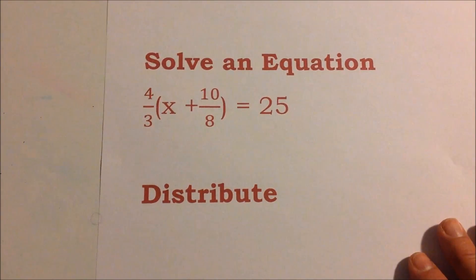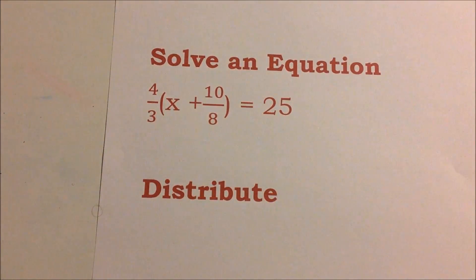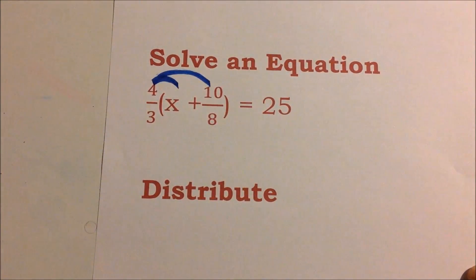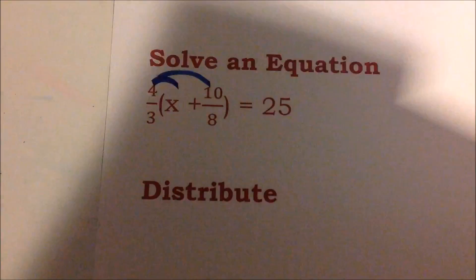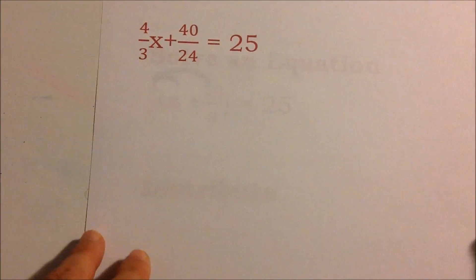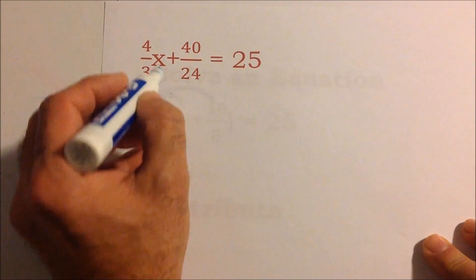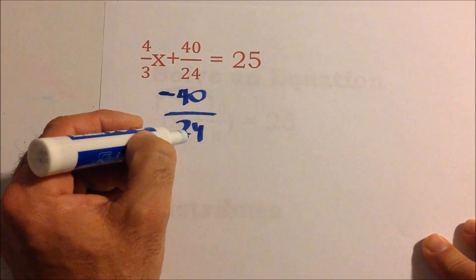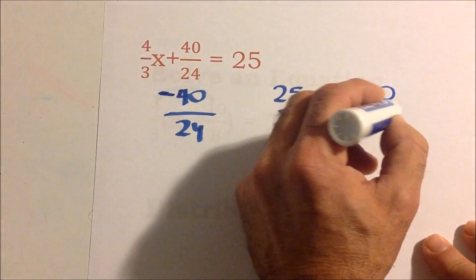Now we see a linear equation — how do you know? The x doesn't have an exponent bigger than 1. We have to distribute the four-thirds into the parentheses: four-thirds times x is four-thirds x, and four-thirds times 10 over 8 is 40 over 24. To solve for x in a linear equation, we get rid of the plus or minus terms first, so we subtract 40 over 24 from both sides: 25 over 1 minus 40 over 24.